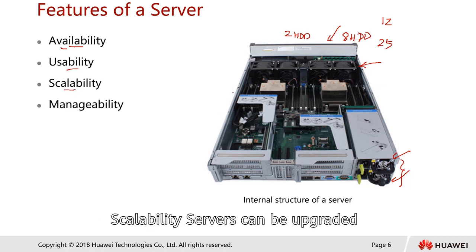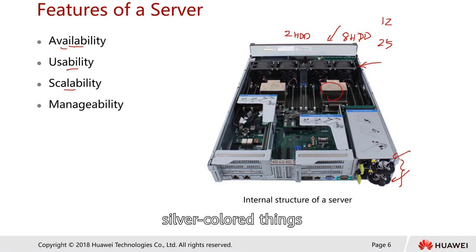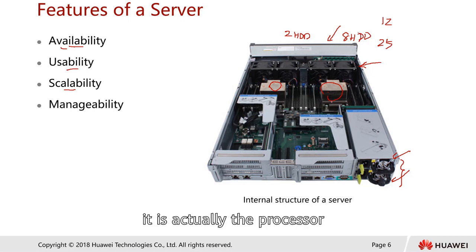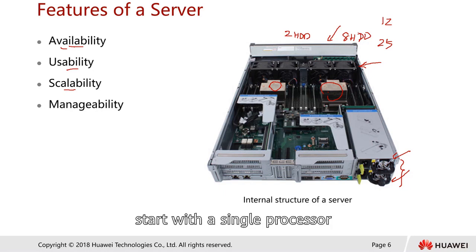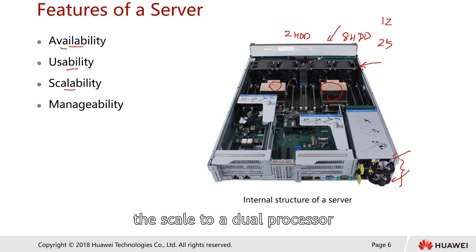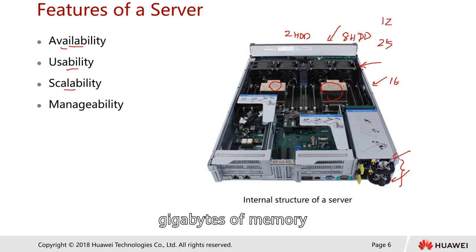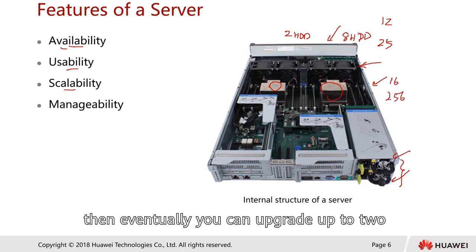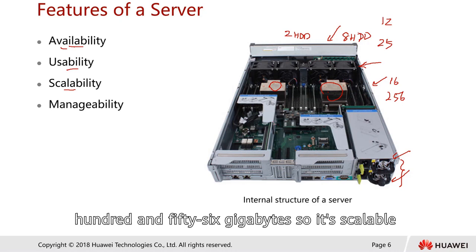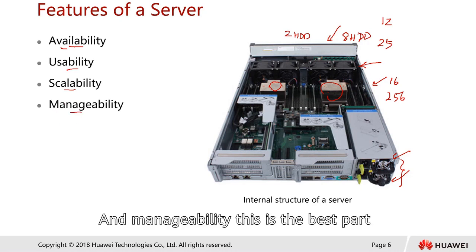Servers are scalable. Looking at these two silver-colored items — these are actually two processors with heat sinks below them. Some companies start with a single processor then later upgrade to dual processor. For internal memory, you can start with 16 GB and eventually upgrade to 256 GB, so servers are scalable.